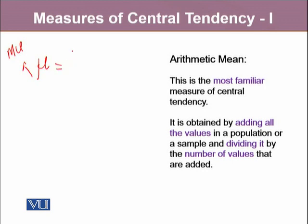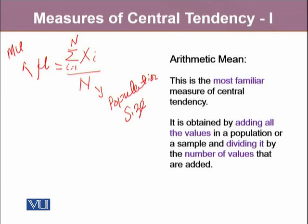If we calculate arithmetic mean from the population, it is known as μ (mu). Mu is a Greek letter that is used to represent arithmetic mean for the population. This μ equals to summation, i varies from 1 to N, of all the observations in the population, divided by the number of observations which have been added. It will give us the average, the arithmetic mean, which is commonly known as the mean.